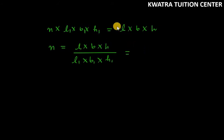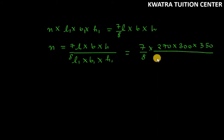Here, 7/8 times 270, 300, and 350, which are the wall's dimensions, divided by the brick's dimensions which is 22.5 times 11.25 times 8.75. If you solve this, you will get 11,200.